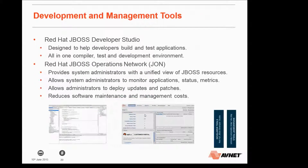To support the portfolio, there's also a Red Hat JBoss Developer Studio designed to help developers build and test applications — an all-in-one compiler, test, and dev environment. For administrators, there's Red Hat JBoss Operations Network, or JON, which provides system administrators with a view of all available JBoss resources on their infrastructure. It allows administrators to view what's going on, keep track of applications, and make sure things are up and running — a traffic light system: green means everything's fine, yellow means something needs attention, red means systems are down and work is needed.